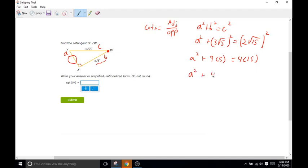So nine times five is 45 and four times 15 is 60. Now to get A squared by itself, we'll subtract 45 from both sides and we are left with 15. We don't want A squared, we just want plain old A. That means we have to square root both sides, meaning A is going to equal the square root of 15.